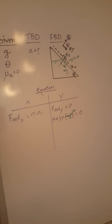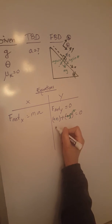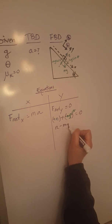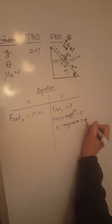When we simplify this vector equation to get our scalar equation, we are going to end up having n minus mg cosine theta equals zero.